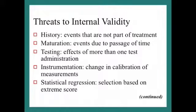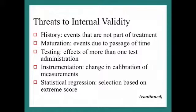Another threat is testing — the effects of taking more than one test. In many designs, we do a pre-test and a post-test. That has an effect because people may learn how to do better on the test. The next threat is instrumentation. Reliability is the ability of the instrument to measure the same thing repeatedly, and validity is whether it measures what it's supposed to. There can be lack of reliability or validity in instruments, and people or calibration may change over time.